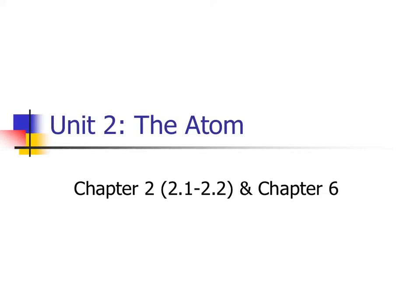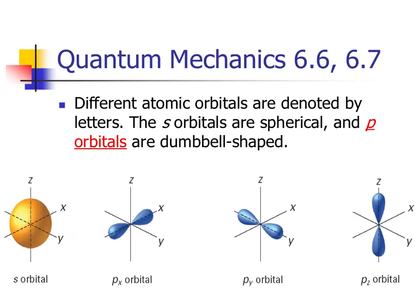As we continue on with unit 2, the atom, we will start putting the quantum numbers together and actually expand on them just a little bit. First off, the different atomic orbitals are denoted by their letters, as we saw the S, P, D, and F. Those letters have a shape associated with it.